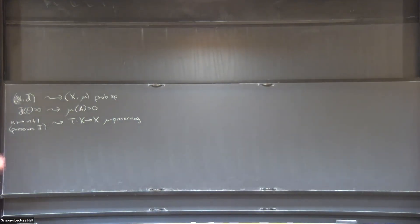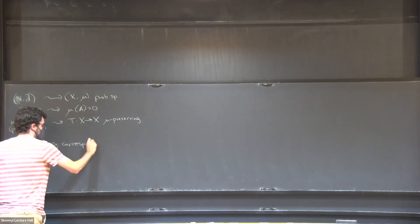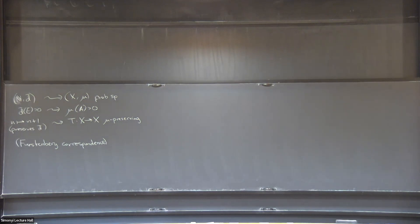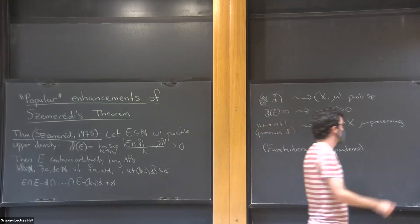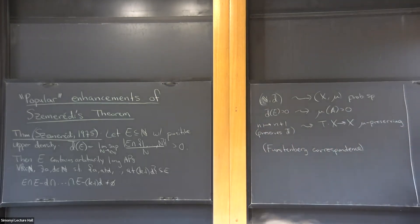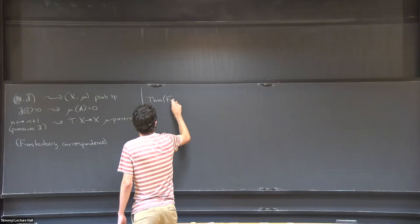And so we can model this with some transformation that preserves the measure. And so I'm not stating a precise result, but there is a translation that you can do here. And this is the content of Furstenberg's correspondence principle that given some set of positive density, we can find some probability space that's going to model what's happening over here.